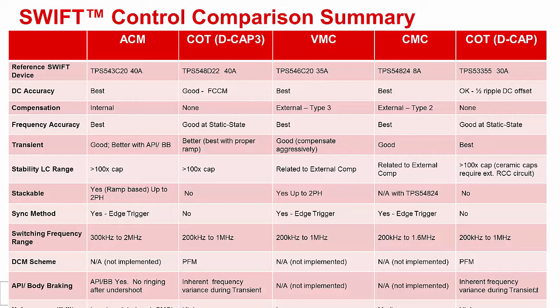Furthermore, such solutions typically degrade the transient response. Advanced current mode control is differentiated by offering very stable solutions over a wide range of operating conditions without the need for external compensation. It also offers optional features such as body break and asynchronous pulse injection, or API, to achieve transient responses that are as good or superior to COT solutions.